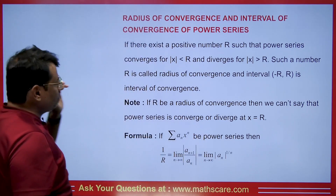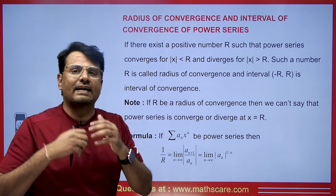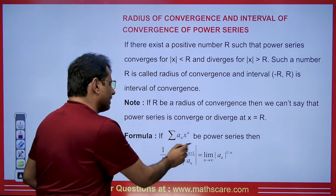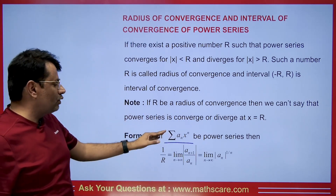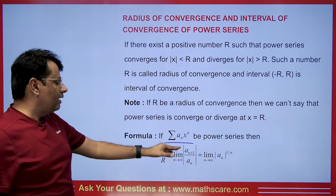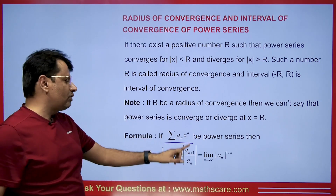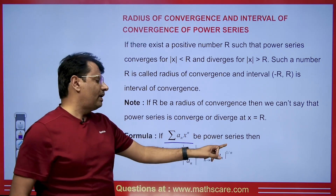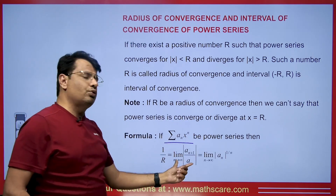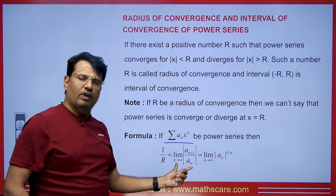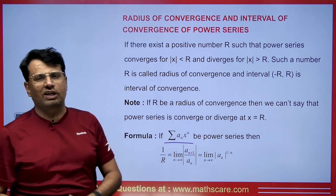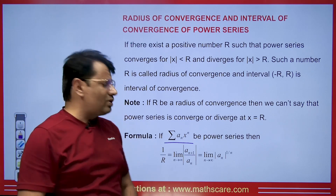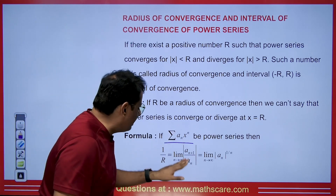How do we actually find the radius of convergence? If we have any infinite series, its radius of convergence is given by 1/R = lim(n→∞) |aₙ₊₁/aₙ| — this is the D'Alembert ratio test — or 1/R = lim(n→∞) |aₙ|^(1/n) — this is the Cauchy root test. We can use both to find it.